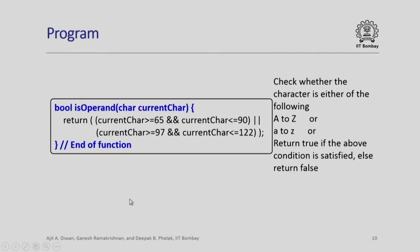One more function needed is to check whether a particular character is an operand. The current character is given and we have assumed operands will be single character variable names, capital A to Z or small a to z. This small function checks whether the characters are within this range. A simple return statement is used: if the condition is true the function returns true, otherwise it returns false.